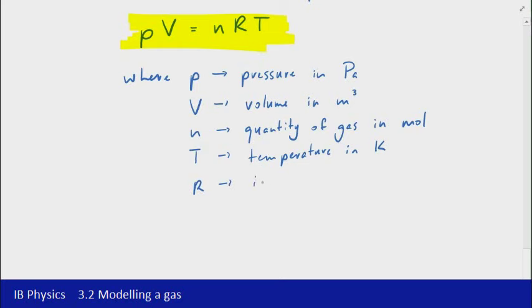And lastly, R is the ideal gas constant. It has a specific value you can look up in the data booklet. R is equal to 8.31 joules per Kelvin per mole. It's the constant of proportionality that ties all of those quantities together.